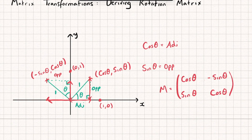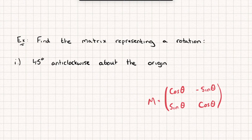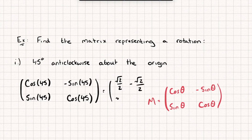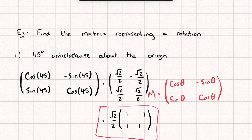Let's look at a couple of questions using this matrix. The first question: find the matrix representing a rotation of 45 degrees anti-clockwise about the origin. Substituting theta = 45, the matrix is [cos 45, −sin 45; sin 45, cos 45]. Evaluating: cos 45 = √2/2, so we get [√2/2, −√2/2; √2/2, √2/2]. Factoring out √2/2 gives (√2/2)[1, −1; 1, 1], which is the rotation matrix for 45 degrees anti-clockwise about the origin.